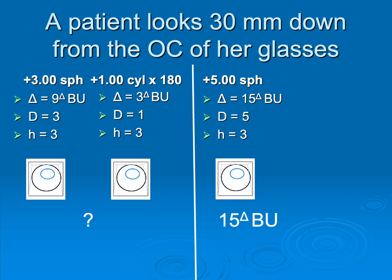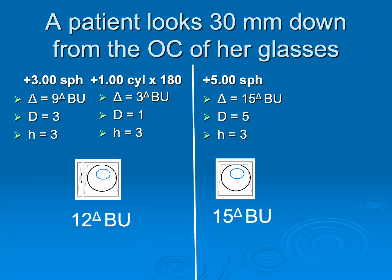So here's what I'm left with. Clearly on the left side, it's easy. Now I just have that plus five to deal with. It's 15 prism diopters base up because I'm looking down through a plus lens, which are two prisms stacked base to base. But on the right, I have two lenses kind of stacked on top of each other. How do I figure that out?